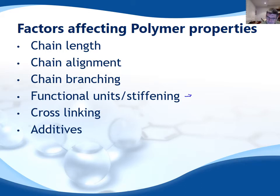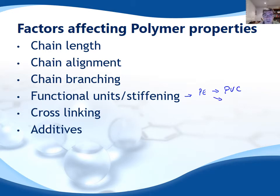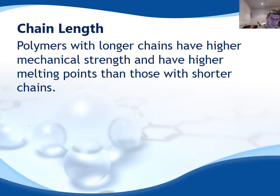When we look at functional units and some of the stiffening that occurs, we'll look at a couple of derivatives from polyethylene that include PVC, which comes from the monomer chloroethylene or vinyl chloride, and also polystyrene, which comes from substitution of a hydrogen with a benzene ring. But we'll look at these later on.